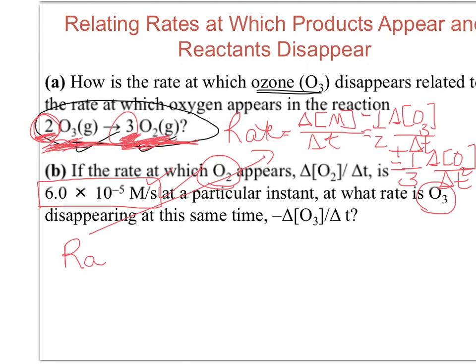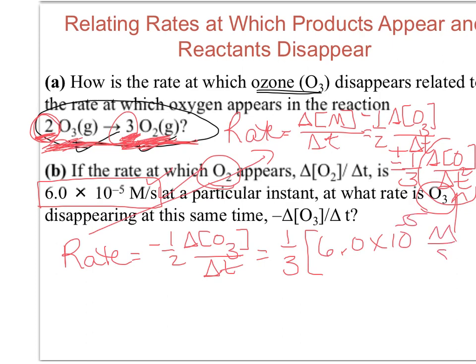The rate expression again is minus one half change in concentration of ozone over time and equals one third. Now the actual rate expression for oxygen is the part that I've just circled here. And so now we know that is six times ten to the minus fifth molarity per second. So now solving this to find out what the rate with respect to ozone is, is simply a matter of algebra. You've got to get this one half sign away so that all you have on the left hand side of the expression is the rate with respect to ozone. So how do I get rid of that one half? You multiply both sides by two.